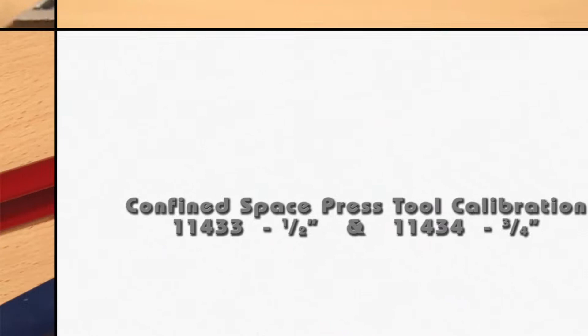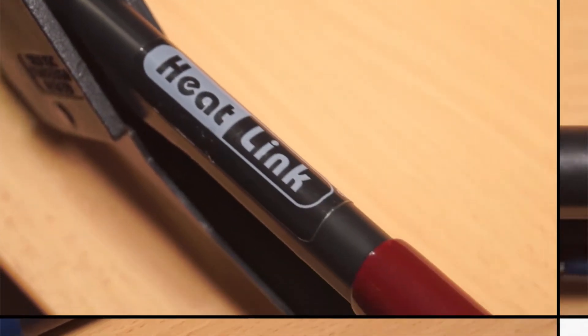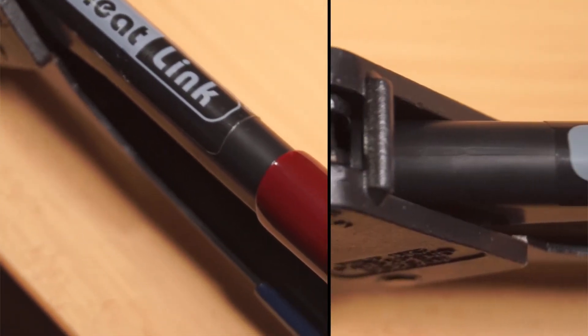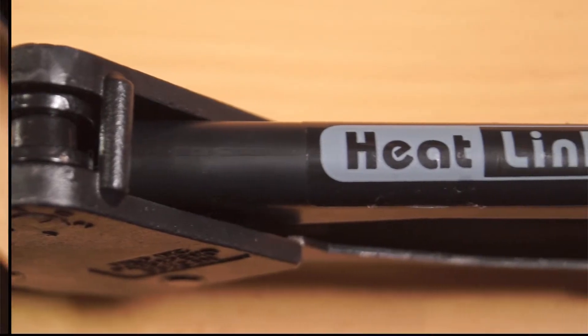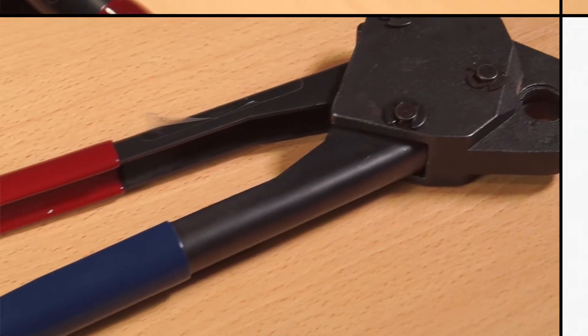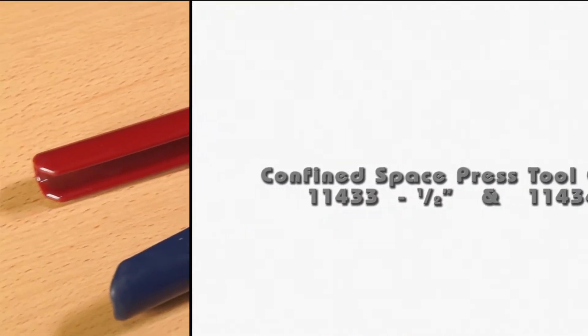Heat-Link press tools are used to create a watertight seal between Heat-Link PEX tubing and fittings using our stainless steel sleeves. For proper and consistent presses, each tool must be calibrated as necessary using the following procedure.